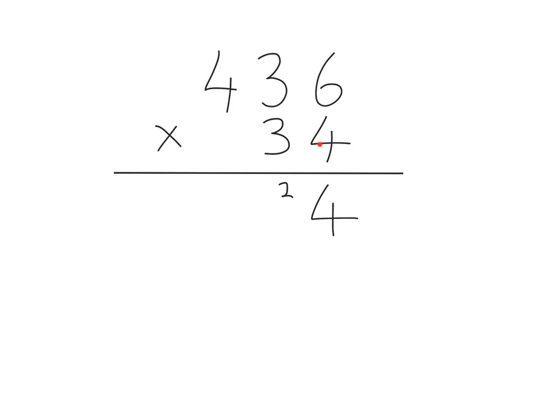Now we're going to do four multiplied by the 30 there. So four times three is 12. Add the two that we've already got in that column, 14. Write the four down, the one goes into the next column just small there.